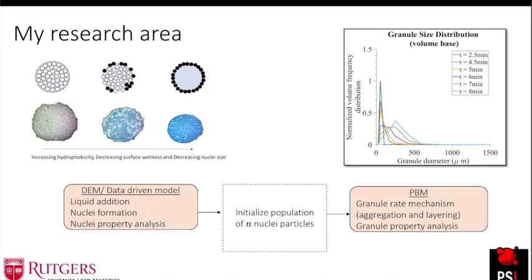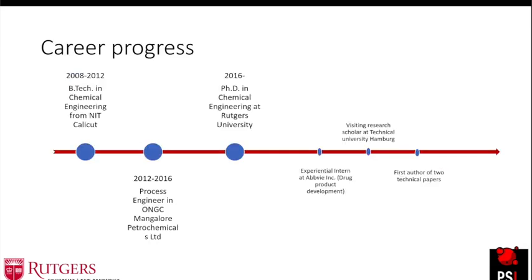That is my research area, and that's all I've prepared on process modeling in pharma drug manufacturing. Regarding my career progress: I graduated from NIT in 2012, worked at ONGC for four years, and I'm currently a fourth-year student at Rutgers. I worked as an experiential intern at AGVI for a summer internship in the drug product development department, and the next summer I visited the Technical University of Hamburg to do DEM simulations and develop software. I have written two technical papers as first author, with two more currently under review.